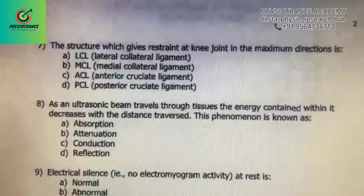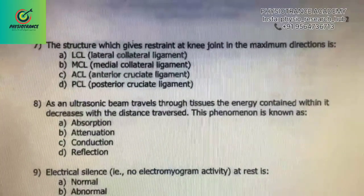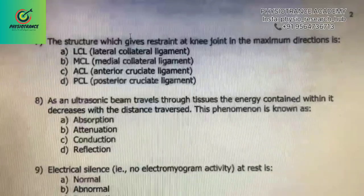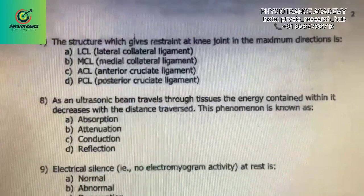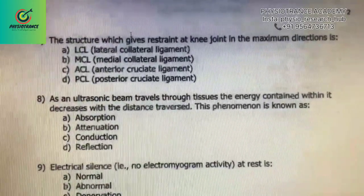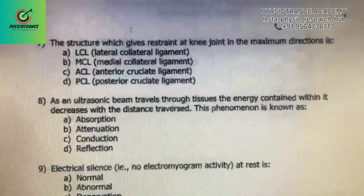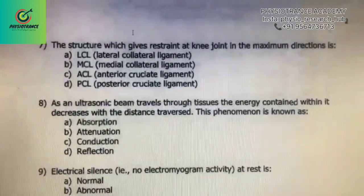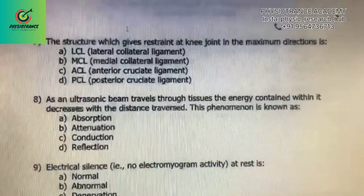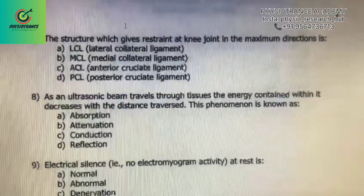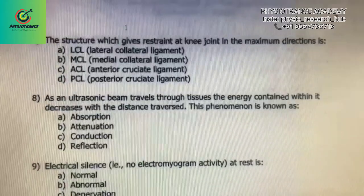Hello friends, once again we are back with new questions and answers for CREMS exam preparation. These are important and tricky questions. First question: the structure which gives rear strain at the knee joint in the maximum direction is A) LCL, B) MCL, C) ACL, D) PCL. The correct answer is B) MCL.